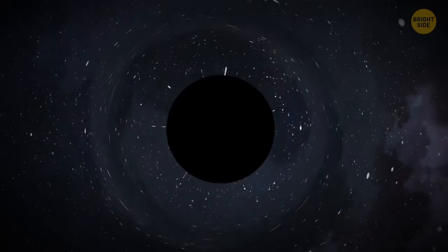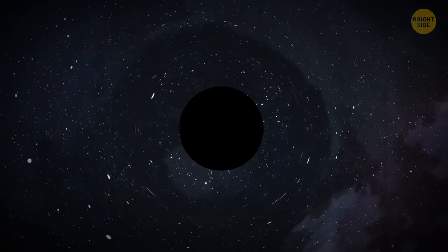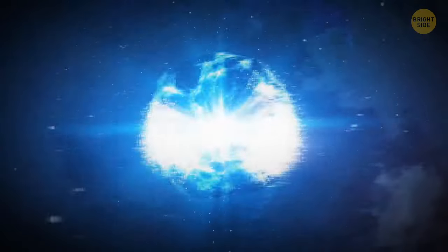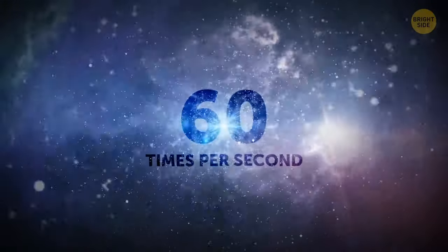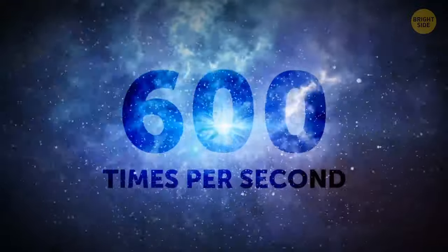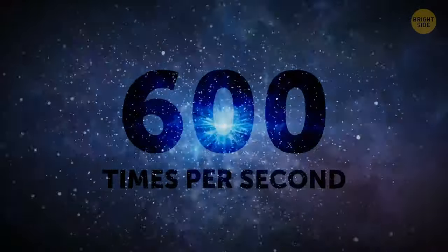A neutron star gets born after a supernova collapses. After birth, it rotates extremely fast – about 60 times per second. But this rate can sometimes grow up to 600 times per second.